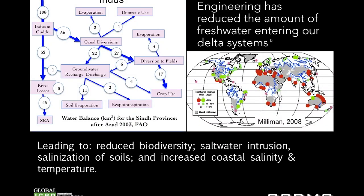Engineering has basically intercepted fresh water from getting to the coast. On the Indus, 108 cubic kilometers of water enter and only 45 reach the sea, with most being taken out for agriculture and domestic use. The amount of water getting to these deltas has been reduced by more than 30% over the last 50 years because of things like the Indus diversion. When water doesn't get to the coast, it does all sorts of harmful things.